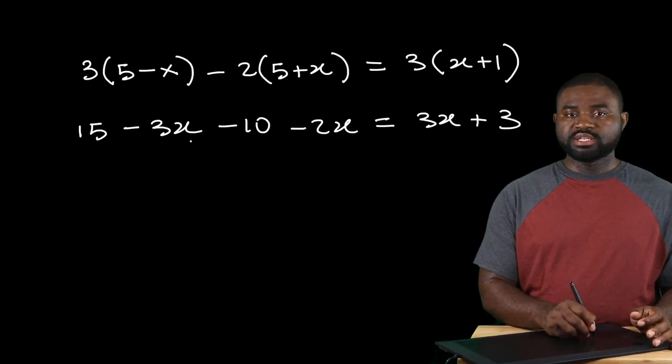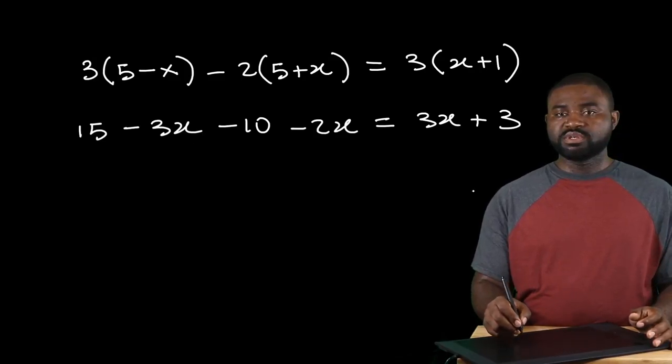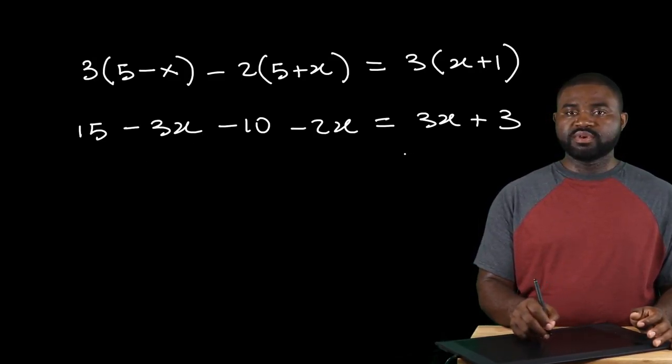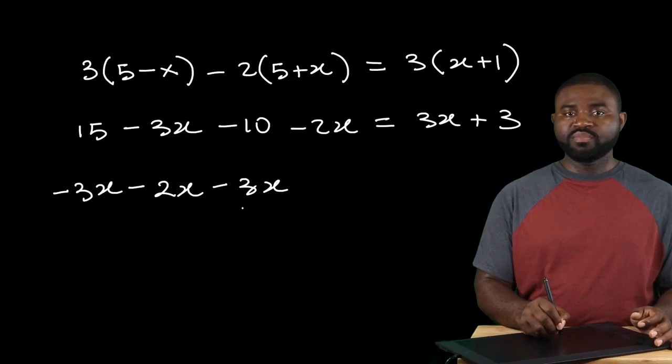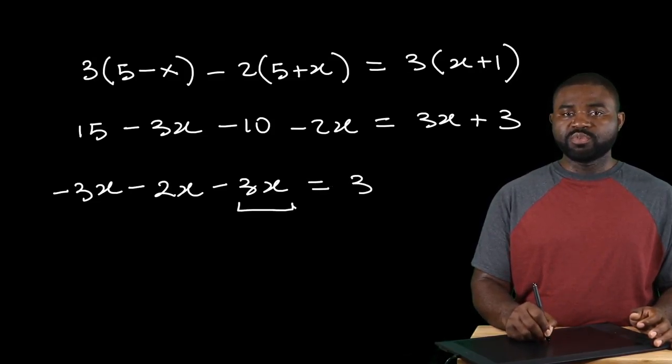We're going to take this and this to the left and this to the right and 3x to the right. So we are going to have negative 3x, negative 2x, negative 3x. This is the term from the other side. All of this will be 3 negative 15 plus 10.